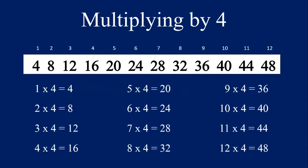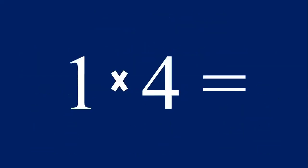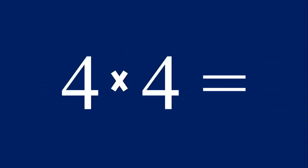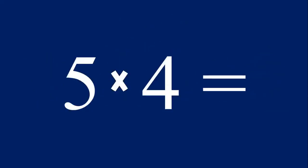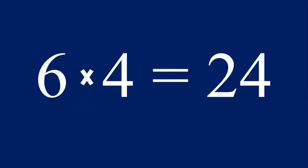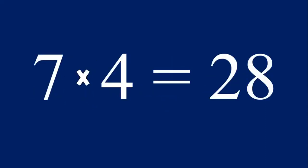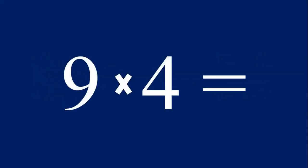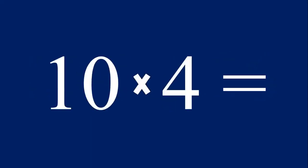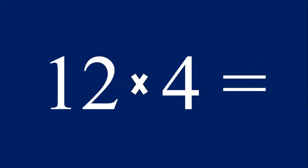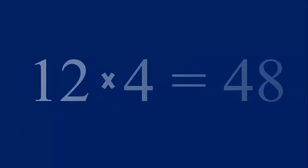Now let's multiply the number four by one through 12. One times four equals four, two times four equals eight, three times four equals 12, four times four equals 16, five times four equals 20, six times four equals 24, seven times four equals 28, eight times four equals 32, nine times four equals 36, ten times four equals 40, eleven times four equals 44, and 12 times four equals 48.